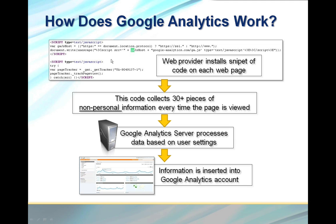It is a pretty simple process. You put the snippet of code on your site, this snippet of code records a bunch of information about the user. It is non-personal information — meaning it is not their email address, it is not their name, it is not their phone number or anything like that. It is all non-personal information such as what type of browser they are using, what the last page they visited was, whether they have been on the site before. The analytics server processes it and sends it on to your analytic account.